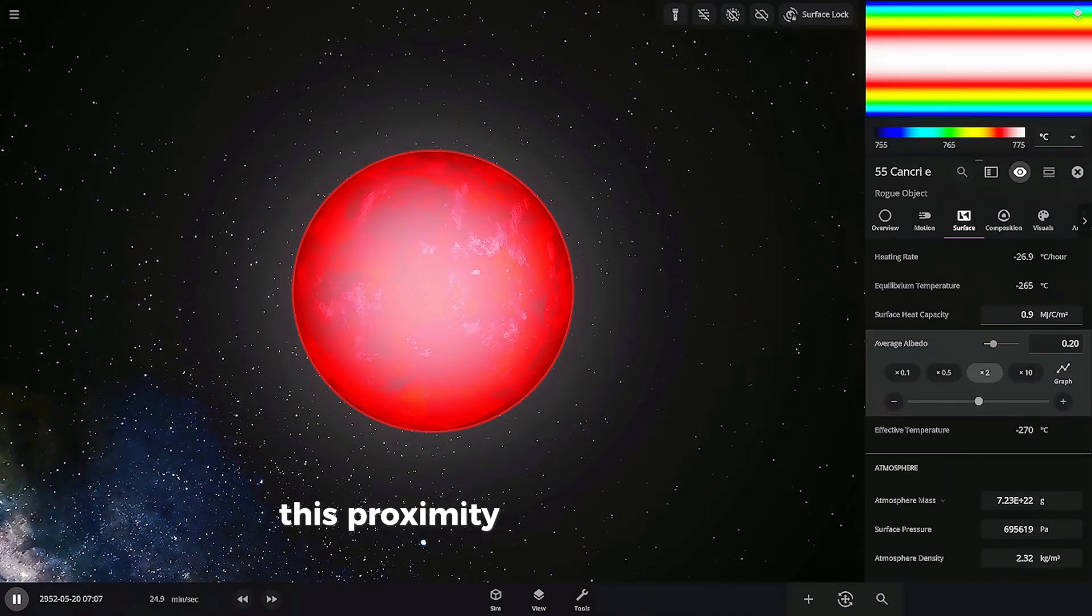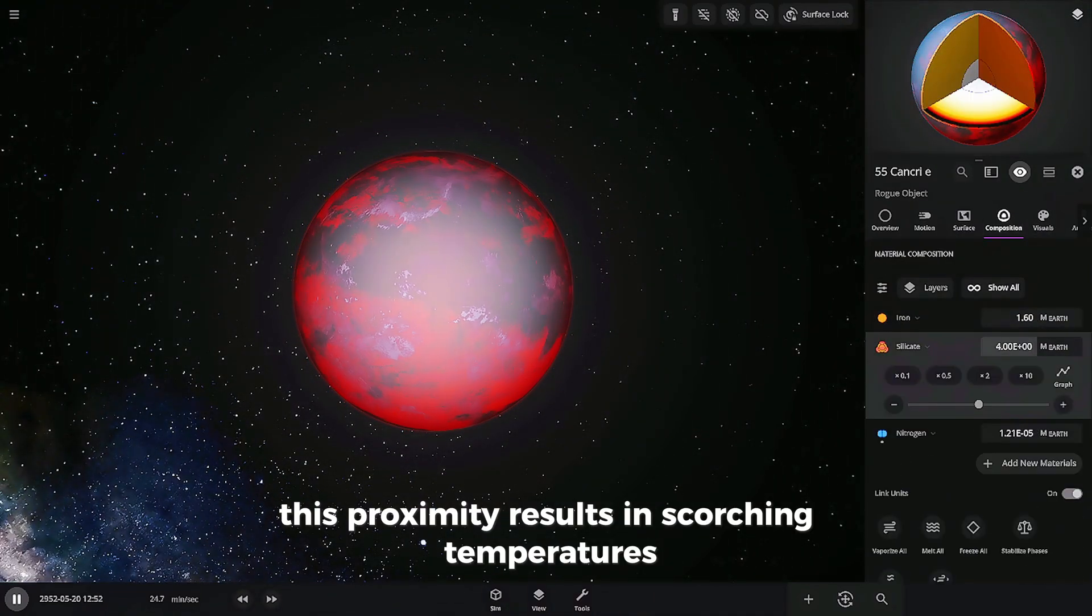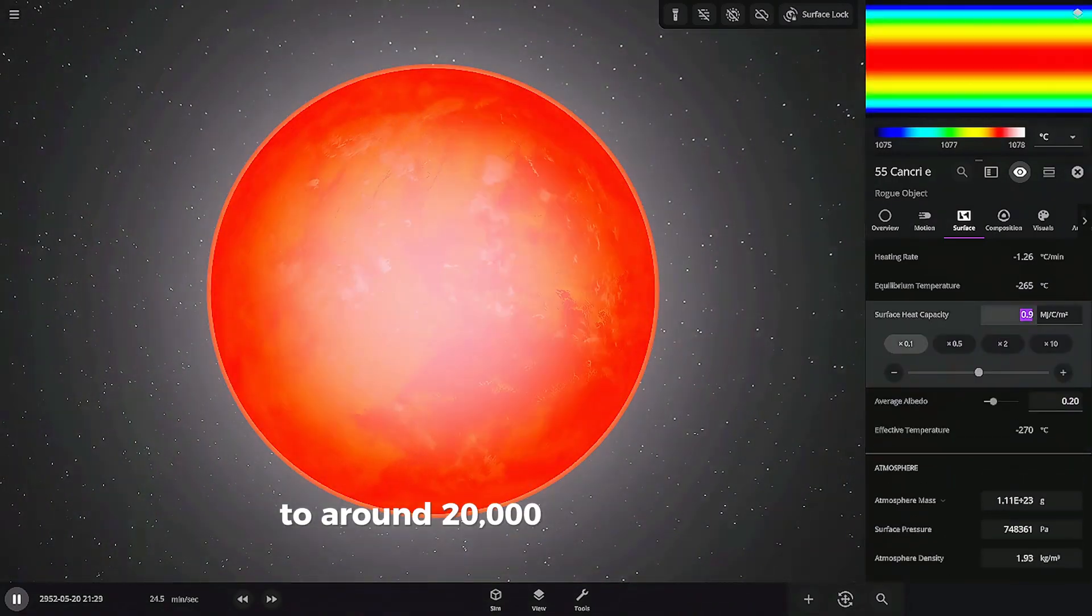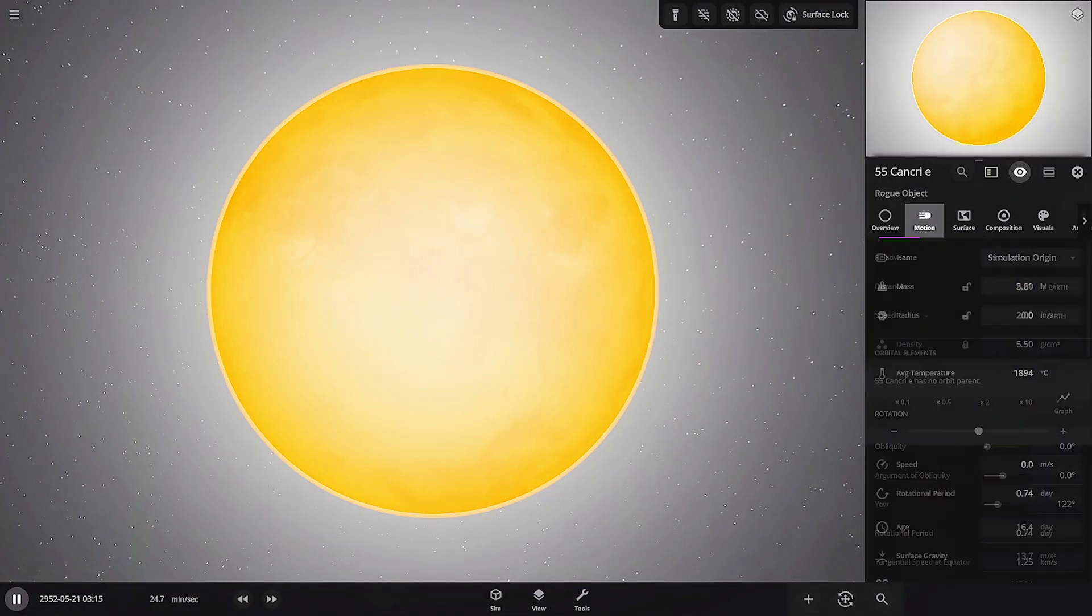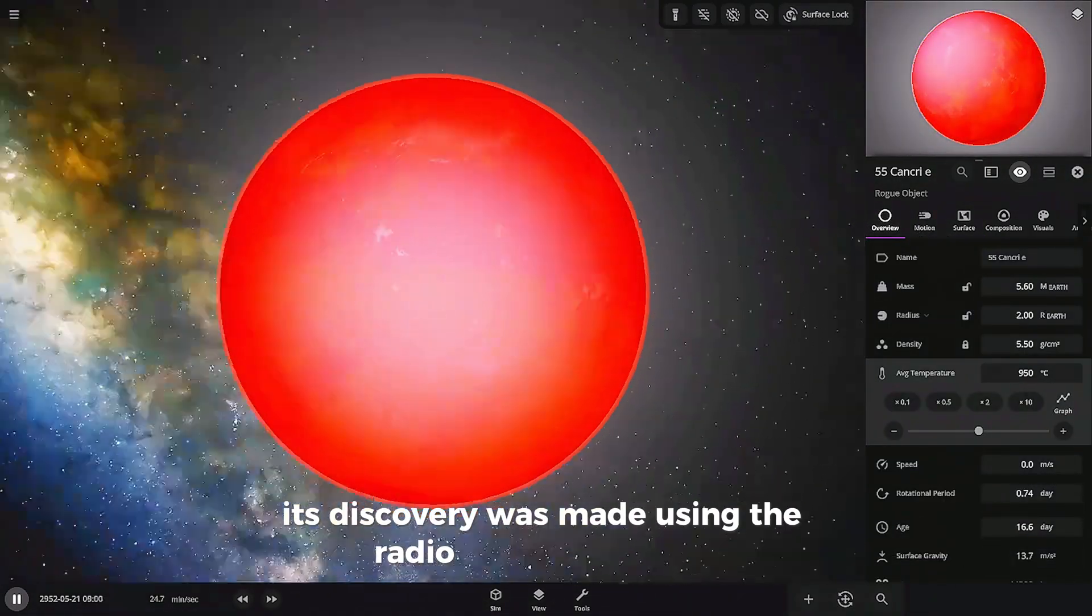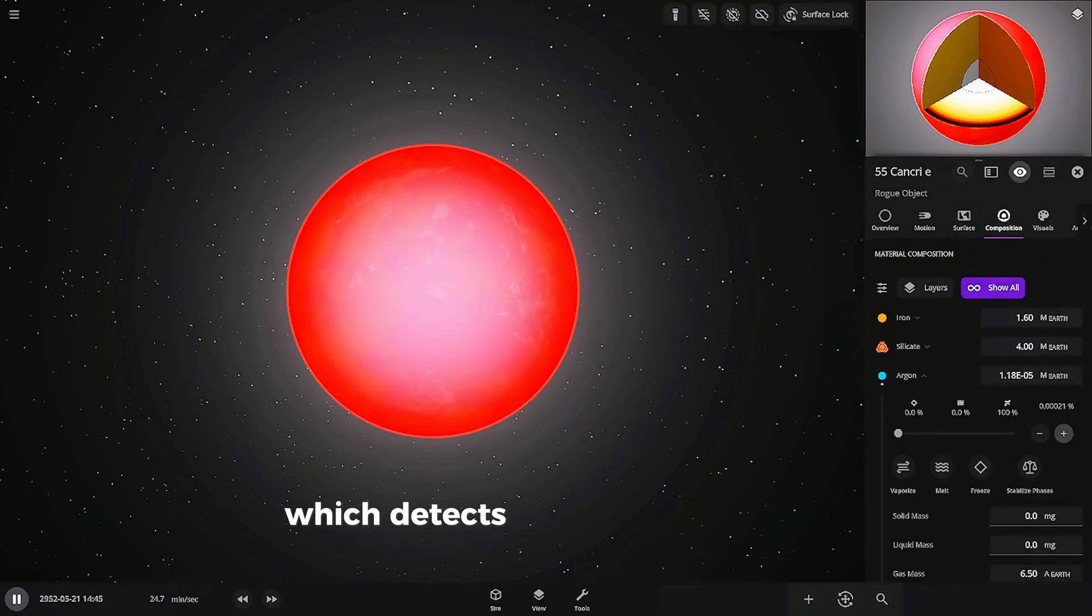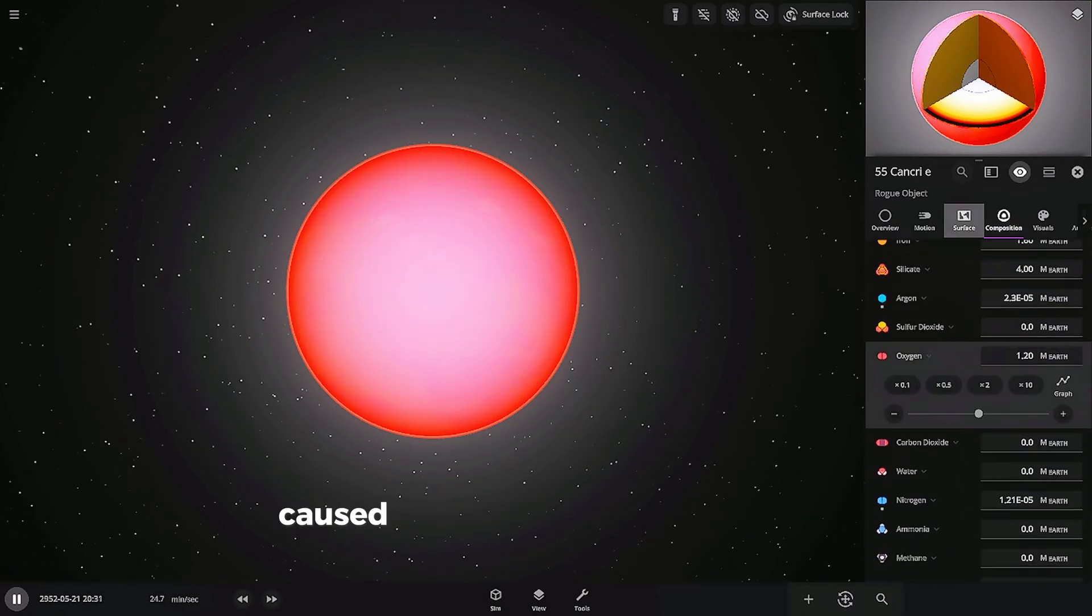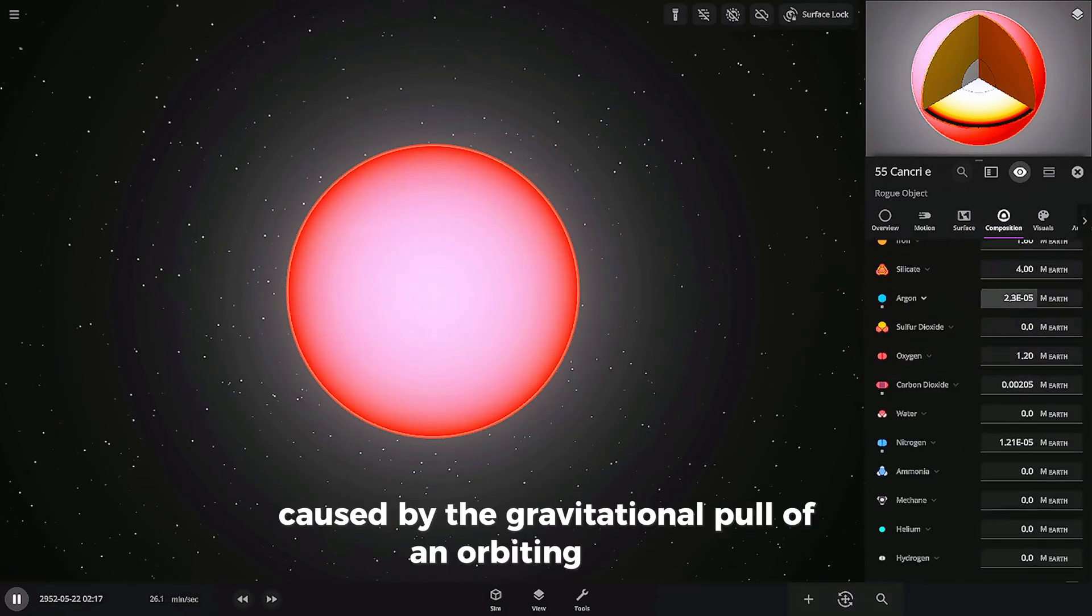This proximity results in scorching temperatures, with average surface temperatures soaring to around 2,000 degrees. Its discovery was made using the radial velocity method, which detects wobbles in a star's movement caused by the gravitational pull of an orbiting planet.